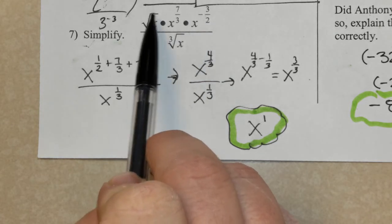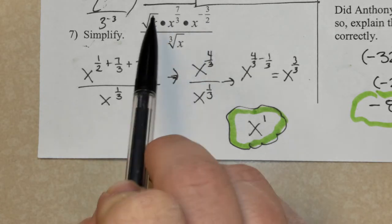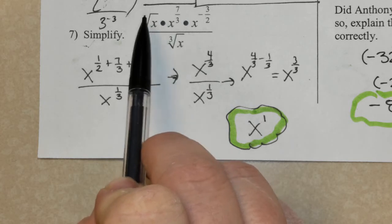Remember, what we see is a square root. Square root has a hidden 2. Square root, okay?